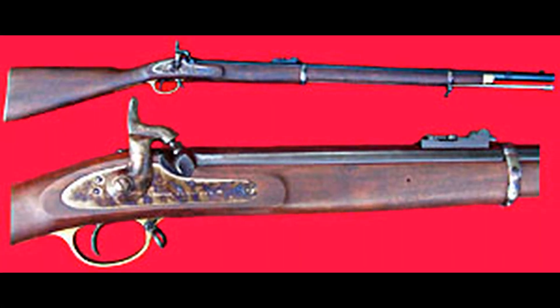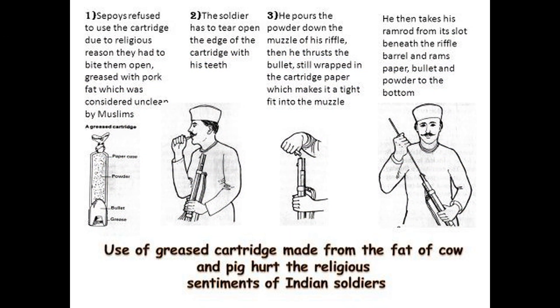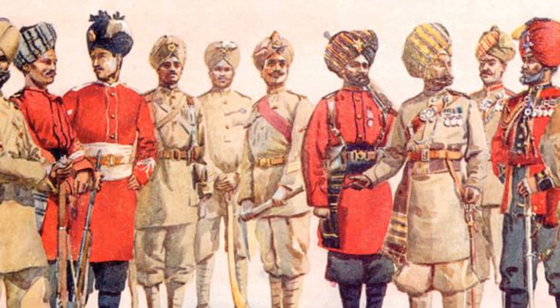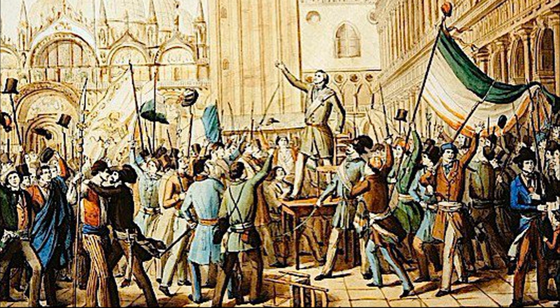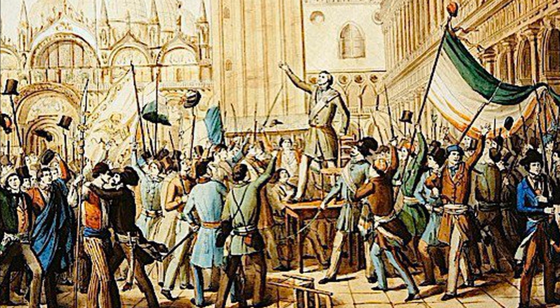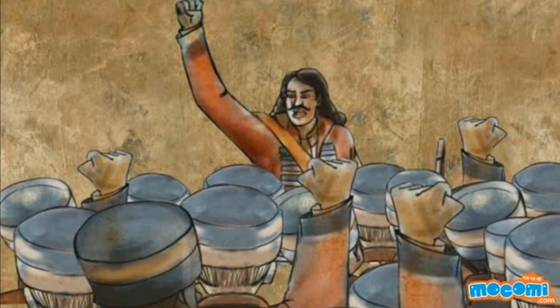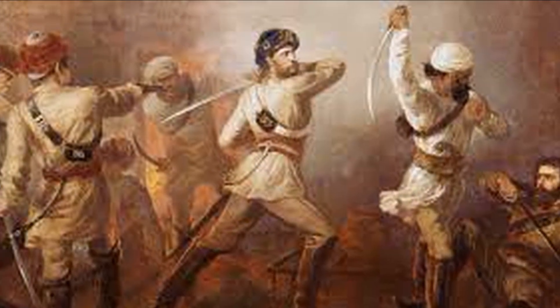One of the primary catalysts for the revolt was the introduction of the new Enfield rifle, whose cartridges were rumored to be greased with a mixture of cow and pig fat. For both Hindu and Muslim sepoys, this was a direct affront to their religious beliefs, fueling widespread discontent. The incident at Meerut, where Indian soldiers refused to use the cartridges, quickly escalated into a broader rebellion.